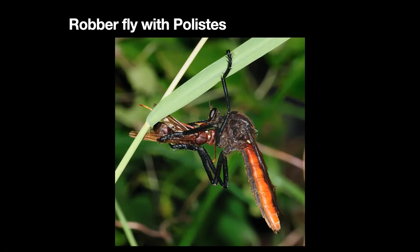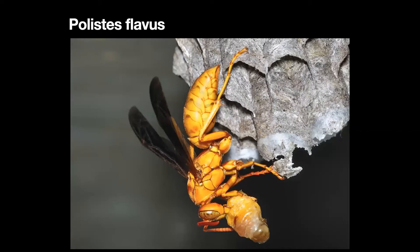Here's another common species — Polistes flavus, photographed over by Green Valley. When times get hard, perhaps in a drought or towards the end of the season when it starts to get cold and adults can't find enough prey, they will take the immatures out and cannibalize — they will eat their own immatures.